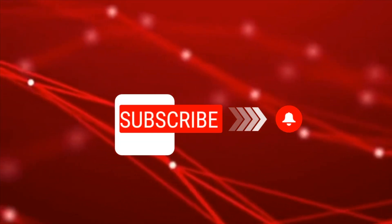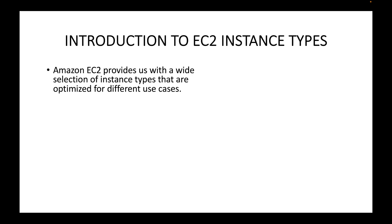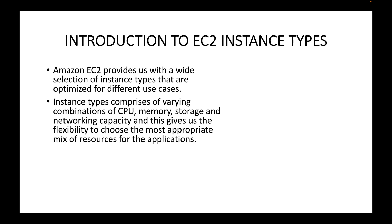We will look at the different types and subcategories available. Amazon EC2 provides a wide range of instance types optimized for different use cases. These instance types comprise a varying combination of CPU, memory, storage, and networking capacity, giving us the flexibility to choose the most appropriate mix of resources for the applications we are going to run.